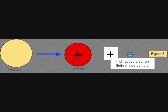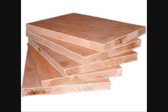Beta radiation occurs in nuclei with an unstable ratio of protons to neutrons. Most frequently there are an excess of neutrons, so a neutron will decay into a proton and release an electron. Less commonly, a proton becomes a neutron and releases a positron, or an anti-electron. Beta particles have greater energy than alpha particles and require a sheet of aluminum or a block of wood to be stopped.